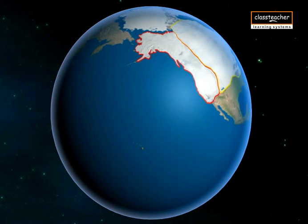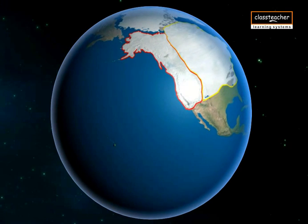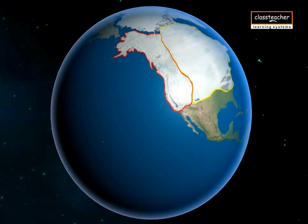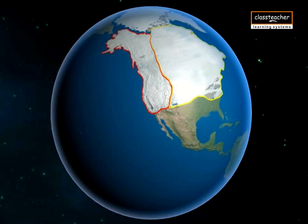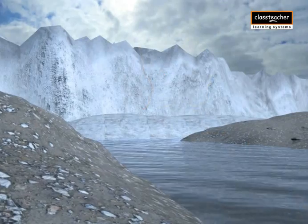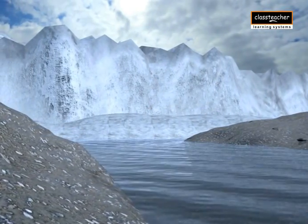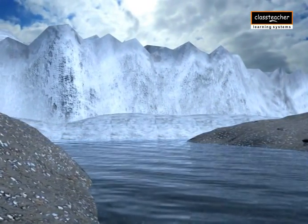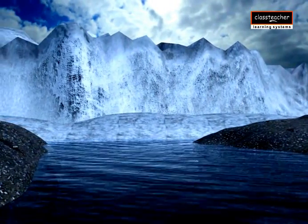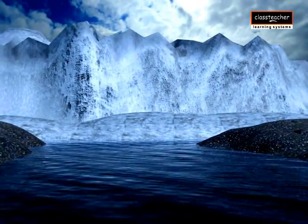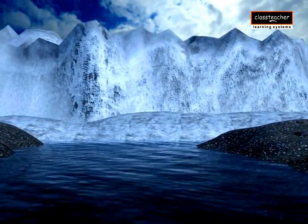The period when the high latitudes were buried under ice sheets is known as the Ice Age. A glacier is defined as a mass of ice that moves under the influence of gravity along a confined courseway from its source area.